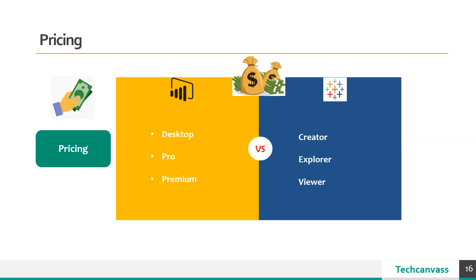When it comes to pricing, Power BI is a more affordable option compared to Tableau. Power BI offers three subscription tiers: Desktop, which is completely free; Pro, which costs $9.99 per user per month with a 60-day trial period; and Premium, which starts at $4,995 per user per month based on storage and resources. Tableau offers Creator, Explorer, and Viewer subscriptions with a 14-day trial period. The Creator plan starts at $70 per user per month, Explorer at $35 per user per month, and Viewer at $12 per user per month. Overall, from an initial cost perspective, Power BI is cheaper than Tableau.